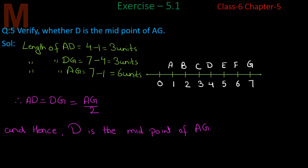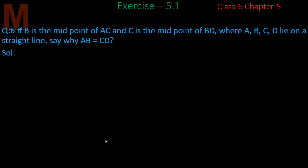Now let's solve question number 6: If B is the midpoint of AC and C is the midpoint of BD, where A, B, C, D lie on a straight line, show that AB = CD. First, let's understand the question — all four points A, B, C, D lie on a straight line.